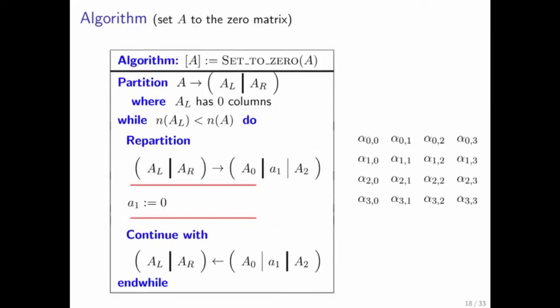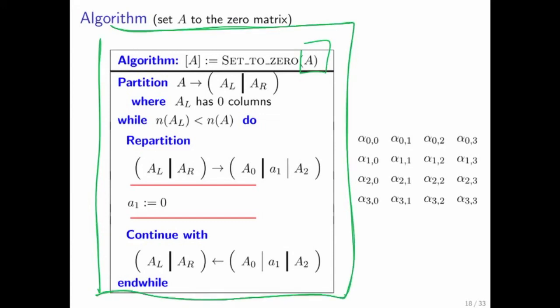And let's look at an algorithm that takes a matrix A and overrides it with a zero matrix. In other words, sets all of its entries equal to zero. And we're going to use this notation, which is a natural extension of the notation that we used when we talked about slicing and dicing vectors.